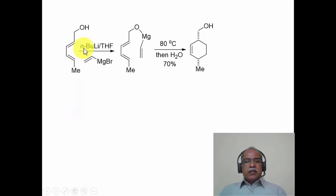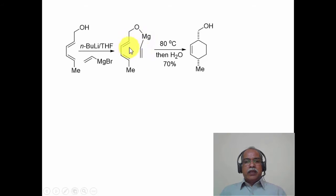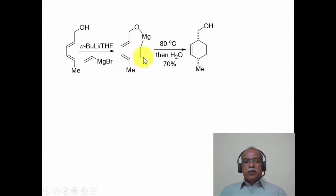In this interesting example, an alcohol is first treated with butyllithium to get the lithium salt, then treated with vinylmagnesium bromide. The intention is to exchange lithium with magnesium so that the vinylmagnesium bromide attaches to the alcoholate, forming a magnesium alcoholate that brings the diene and dienophile close together. Heating to 80 degrees and quenching with water hydrolyzes the magnesium salt, giving the Diels-Alder adduct. This is an intramolecular Diels-Alder reaction of a magnesium-tethered compound.